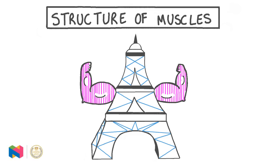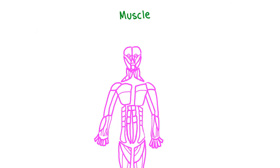In this video we will learn how to describe the structure of muscles by first exploring the different types of muscle before looking at skeletal muscles in more detail on both a macroscopic and microscopic scale. We will learn how skeletal muscle fibers are specialized for their function of providing movement to various parts of the human body.